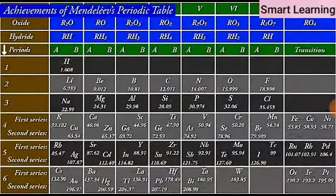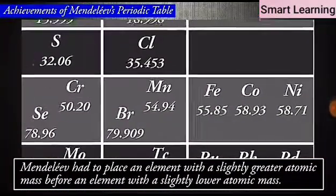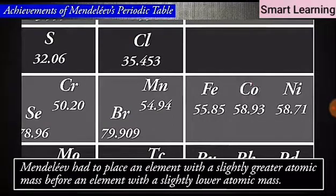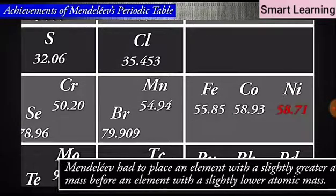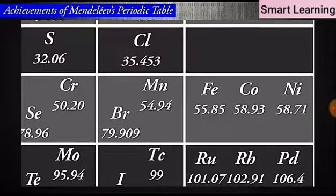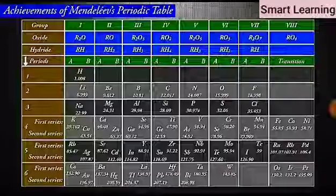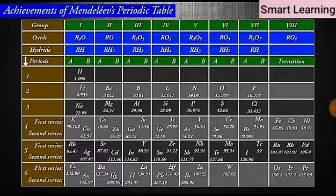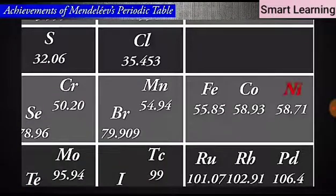While developing the periodic table, there were a few instances where Mendeleev had to place an element with a slightly greater atomic mass before an element with a slightly lower atomic mass. The sequence was inverted so that elements with similar properties could be grouped together. For example, cobalt, atomic mass 58.9, appeared before nickel, atomic mass 58.7.